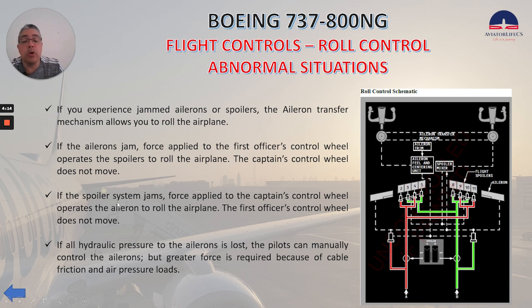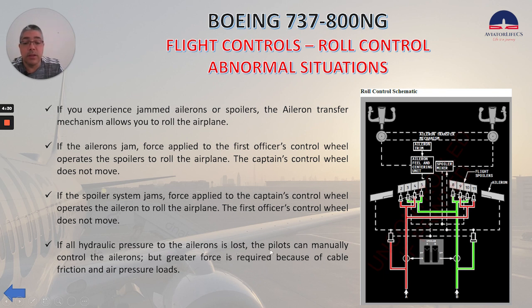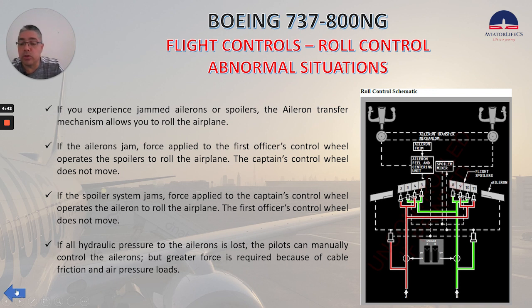If the spoiler system jams, force applied to the captain's control wheel operates the aileron to roll the airplane. The first officer's control wheel does not move. If all hydraulic pressure to the ailerons is lost, the pilots can manually control the ailerons, but greater force is required because of cable friction and air pressure loads.